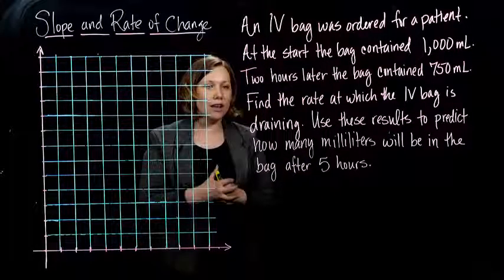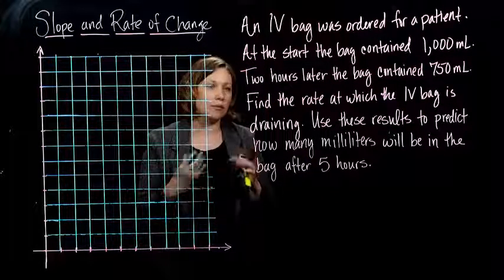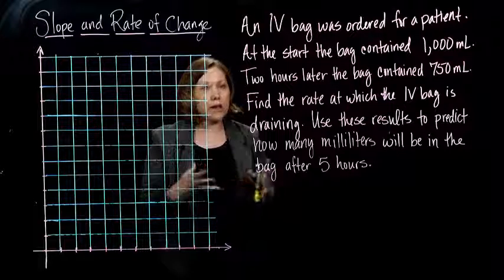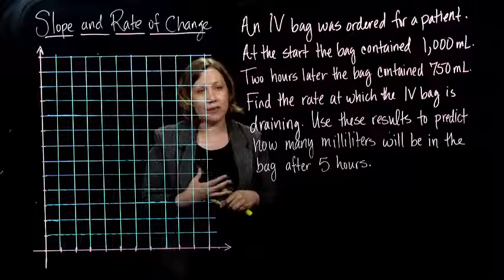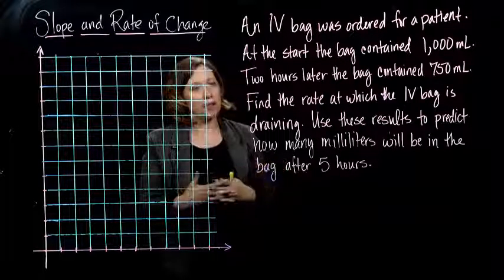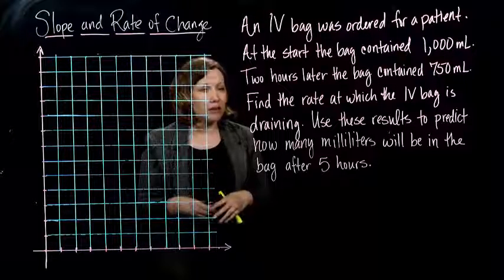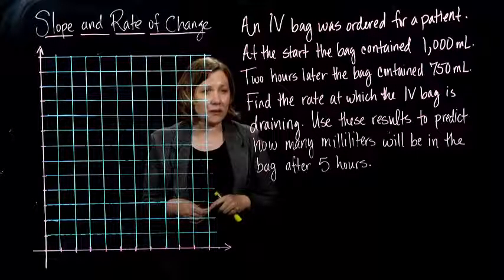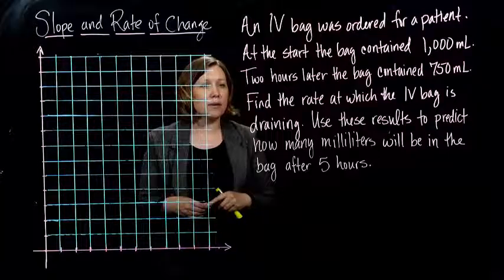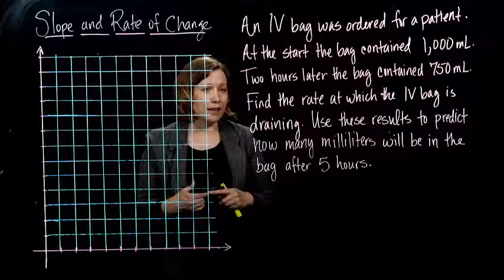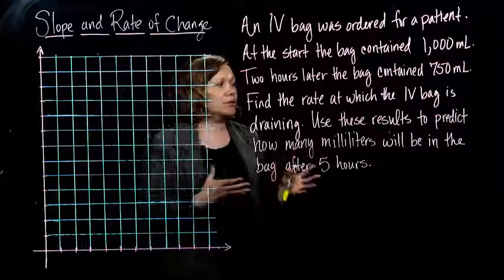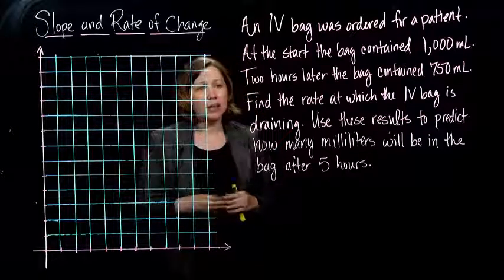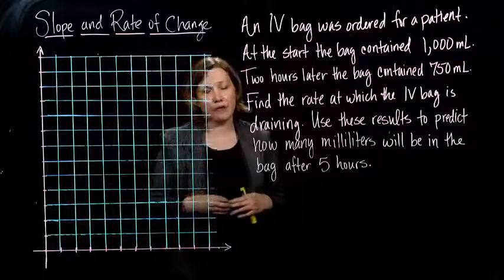Okay, so we've got another example here for having to do with slope. We have an IV bag that was ordered for a patient. It started out with 1,000 milliliters, and then two hours later the bag has 750 milliliters. And we want to find the rate at which the IV bag is draining, and then use these results to figure out how many milliliters will be in the bag after five hours.